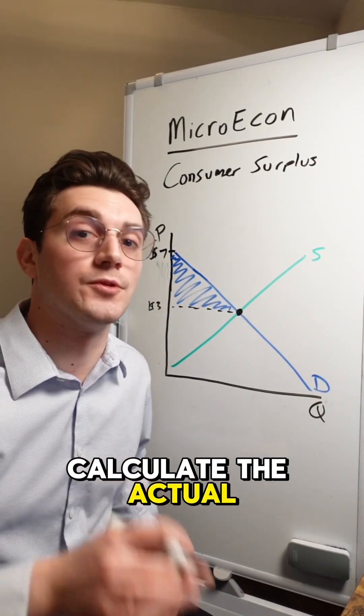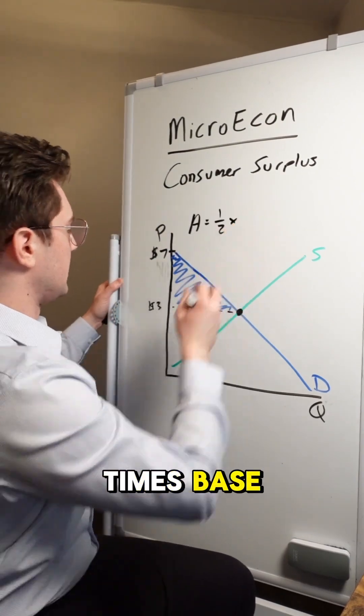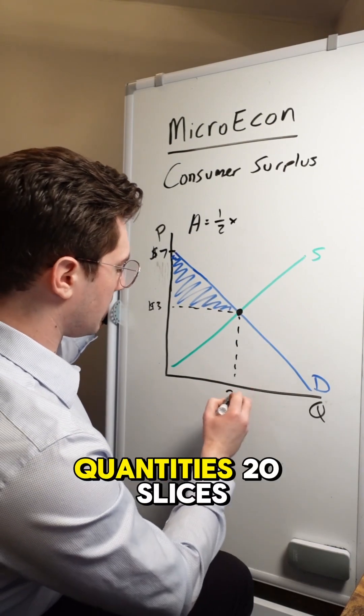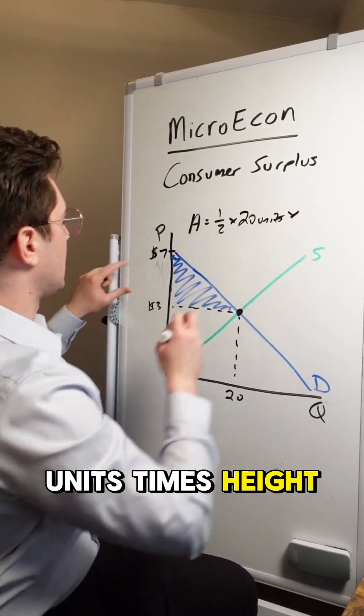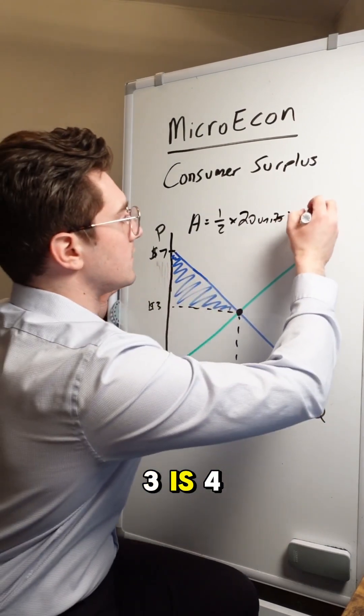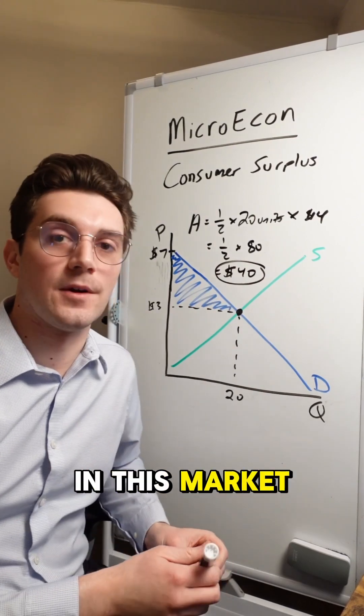And if we wanted to calculate the actual dollar amount of consumer surplus, it's just the area of a triangle. One half times base—I forgot to set that here. So let's say that the equilibrium quantity is 20 slices of pizza. So times 20 units times height, so seven minus three is four. And we solve this out, we get a consumer surplus of $40 in this market.